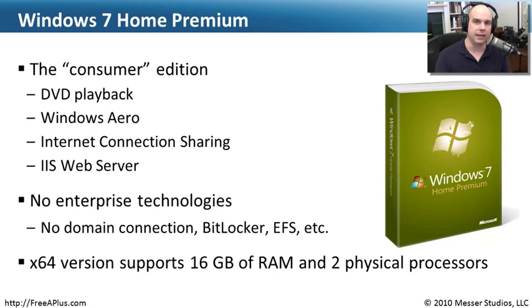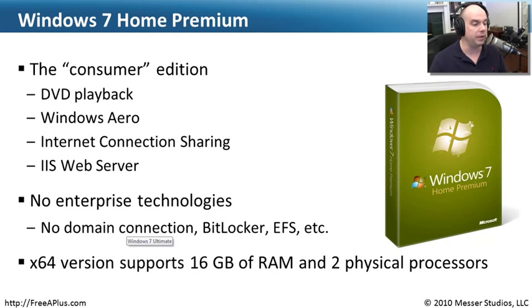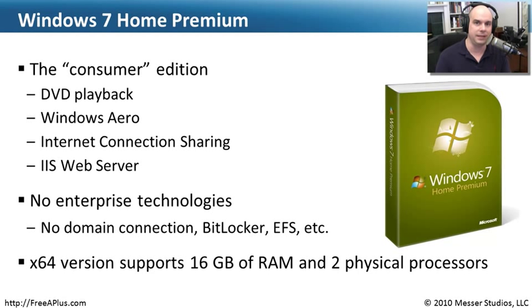However, Home Premium is designed for the home, just like the name implies. So you're not going to see enterprise technologies like connectivity to a Windows domain, encrypted file systems, or BitLocker. What you will see is that it runs on 32-bit or 64-bit, supports up to 16 GB of RAM, and even supports up to two physical processors — not dual-core, but two separate physical CPUs. That's usually found in large servers, but Windows 7 Home Premium can support it.